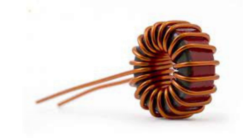The frequency range of an inductor refers to the range of frequencies over which it can effectively store and release energy. Some inductors are designed to operate over a wide frequency range, while others are designed for specific frequency ranges. The core material used in an inductor affects its performance characteristics, including inductance and frequency range. Common core materials include air, iron, ferrite, and powdered metal. The saturation current is the maximum current that can flow through an inductor before its core becomes magnetically saturated. When a core becomes saturated, the inductance value decreases and the inductor can behave differently than expected.